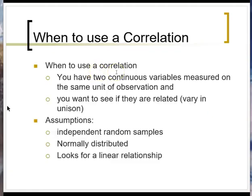We know we're going to use a correlation when we have two or more continuous variables that have been measured on the same unit of observation. Both measurements — or however many variables we're comparing — have to be made on all of our observations, and our goal is to see whether or not these are related. We also have to meet some assumptions: all observations must be independent and random, and we need normally distributed data.